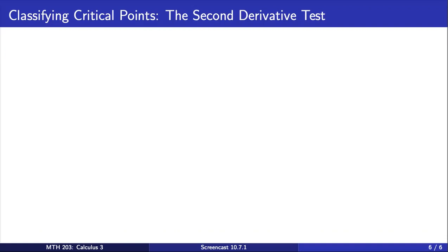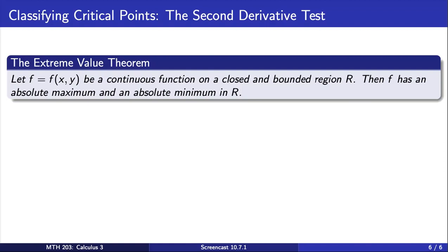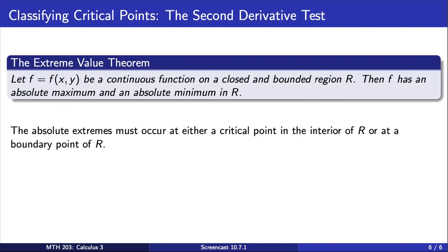The second derivative test helps us classify critical points of a function, but it does not tell us if the function actually has an absolute maximum or minimum at each such point. In single-variable calculus, the extreme value theorem guaranteed the existence of absolute maximums and minimums of functions. This theorem also applies more generally to functions of two variables, and it states that if a function f is continuous on a closed and bounded region R, then f has an absolute maximum and absolute minimum on R. Furthermore, these absolute extremes must occur at a critical point on the interior of R or at a boundary point of R.